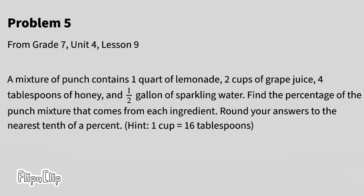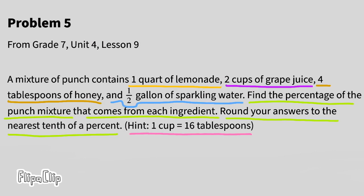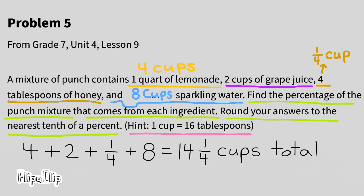Problem number 5, from 7th grade, Unit 4, Lesson 9. A mixture of punch contains one quart of lemonade, two cups of grape juice, four tablespoons of honey, and one-half gallon of sparkling water. Find the percentage of the punch mixture that comes from each ingredient. Round your answers to the nearest tenth of a percent. Hint: one cup equals 16 tablespoons. Let's make each of these measurements the same unit — let's use cups. One quart of lemonade equals four cups. Four tablespoons of honey equals one-quarter cup. We have eight cups of sparkling water. Adding them all up: 4 plus 2 plus one-quarter plus 8 equals 14 and one-quarter cups, or 14.25 cups.